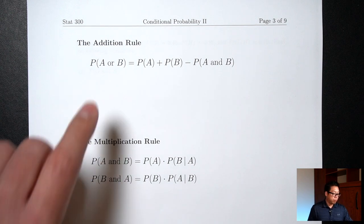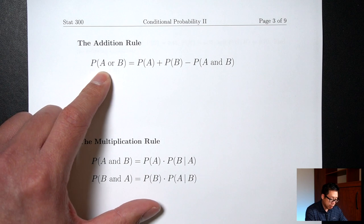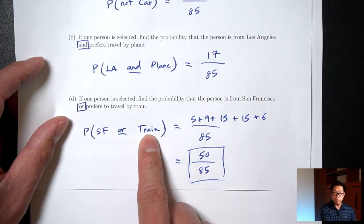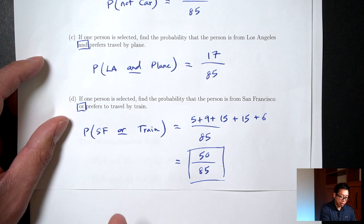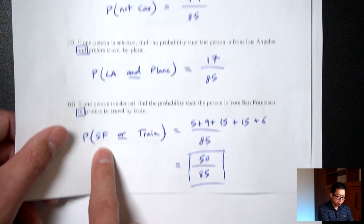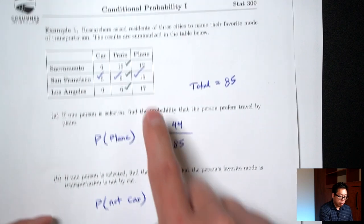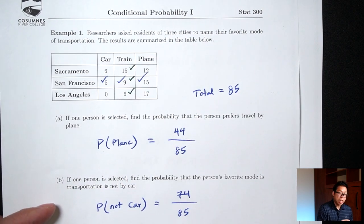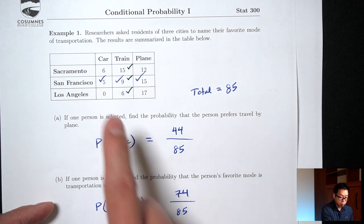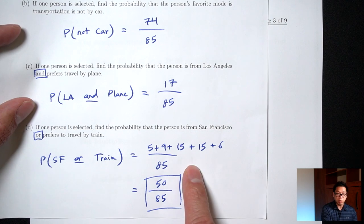Notice that we already know how to find OR probabilities without using a formula at all. In the last lecture, I asked for something like probability of San Francisco OR train. We found it by taking all the San Francisco numbers — 5, 9, 15 — and then adding on the train numbers, but not counting anything twice. So we only added on the 15 and the 6, because the 9 was already counted in the San Francisco numbers.